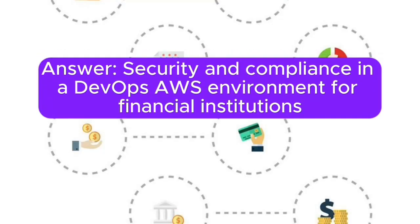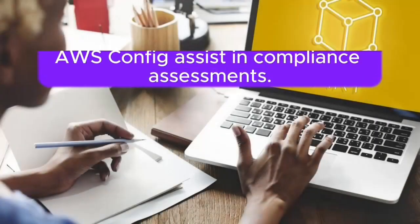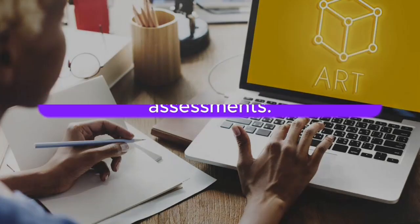Question 1: How do you ensure security and compliance in a DevOps AWS environment for financial institutions? Answer: Security and compliance involve implementing AWS security best practices, encryption, access controls, and regular audits. AWS services like AWS Artifact and AWS Config assist in compliance assessments.